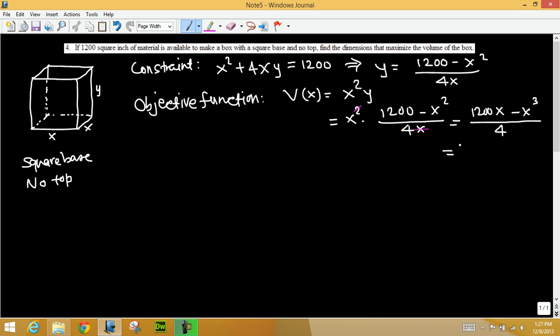Separate into two terms: 1200x over 4, that's 12 over 4, that's 300x, minus x cubed over 4, which is the same as 1/4 x cubed. That's the objective function. Now we want to maximize this one. In any case, to maximize or minimize we find the derivative.